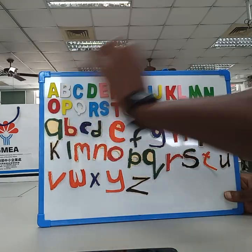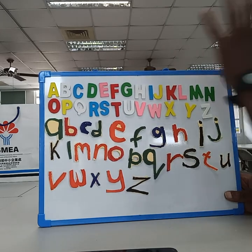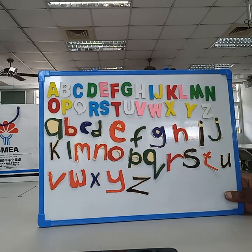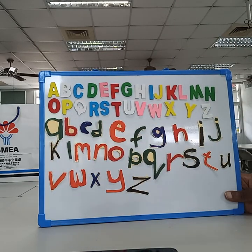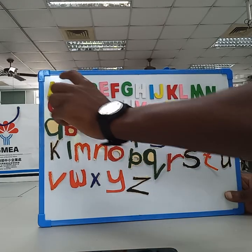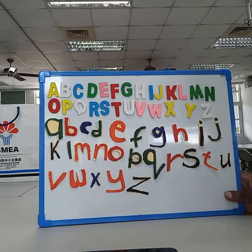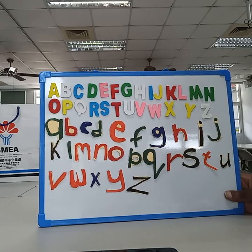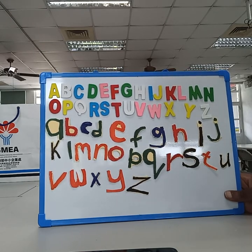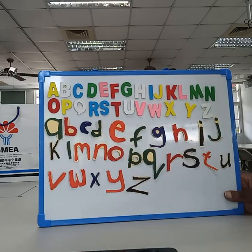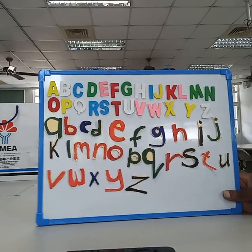These ones on top, we call them big alphabets. And then these are the small ones. Now when we are writing, we don't use these big alphabets. We use the small alphabets. The big ones, we only use them when we start a sentence. But normally you would use the small alphabets.